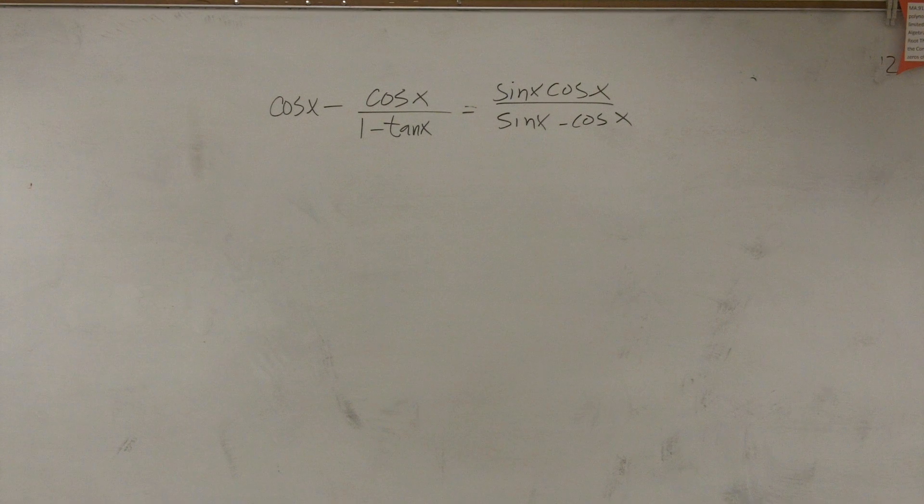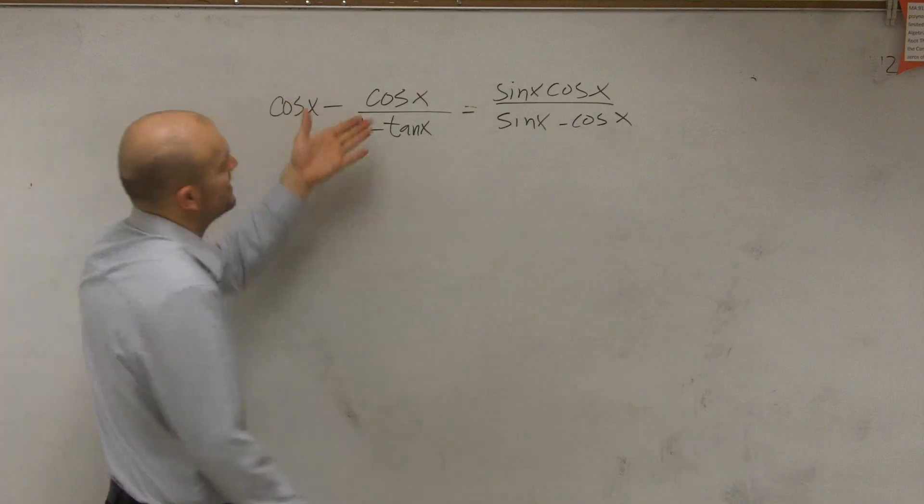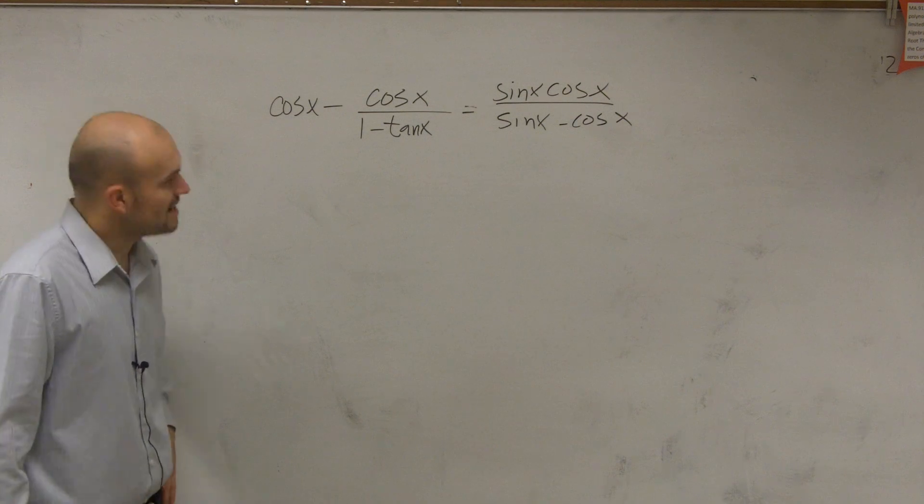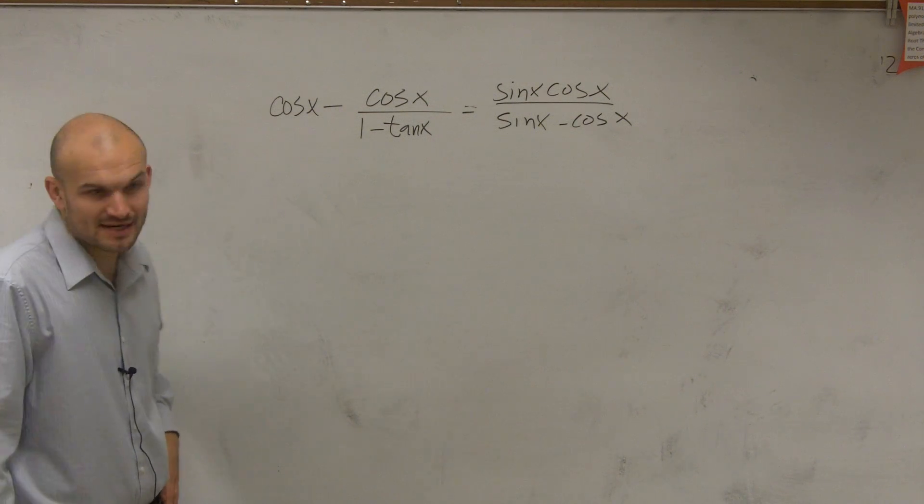All right, so on our final problem here, we have cosine of x minus cosine of x divided by 1 minus tangent of x equals sine of x cosine of x divided by sine of x minus cosine of x.